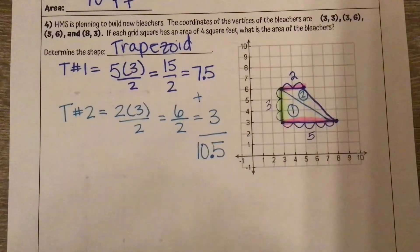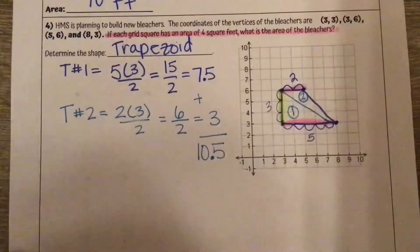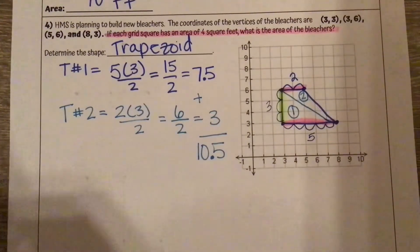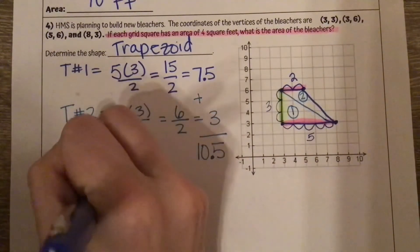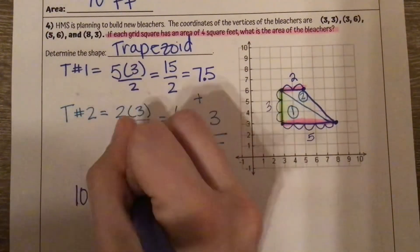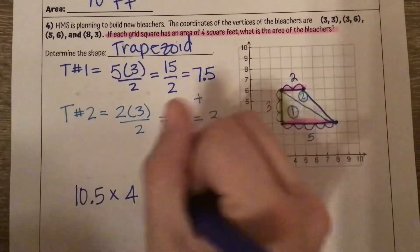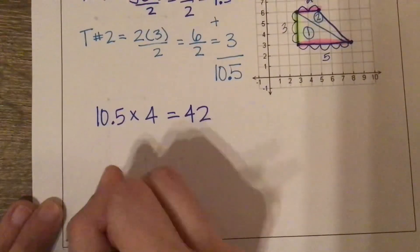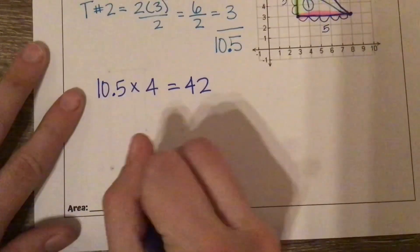But we're not done, because the question says each grid square has an area of four square feet. We have 10.5 of those squares, each representing four square feet, so we multiply 10.5 by four and get 42. Our final area is 42 square feet.